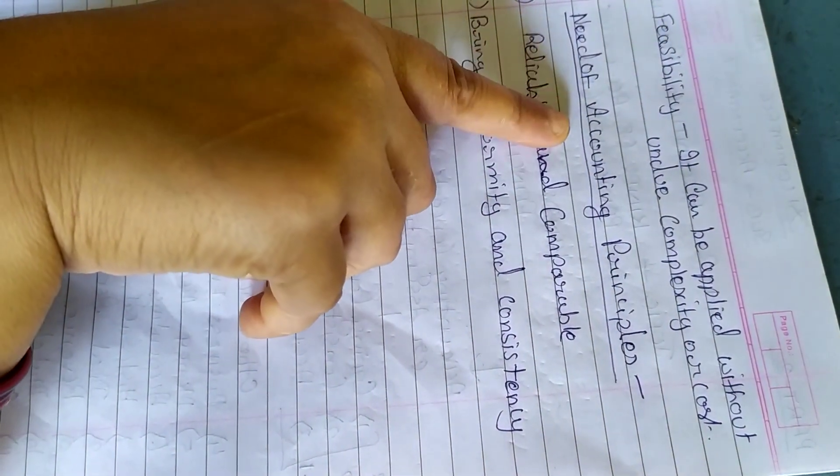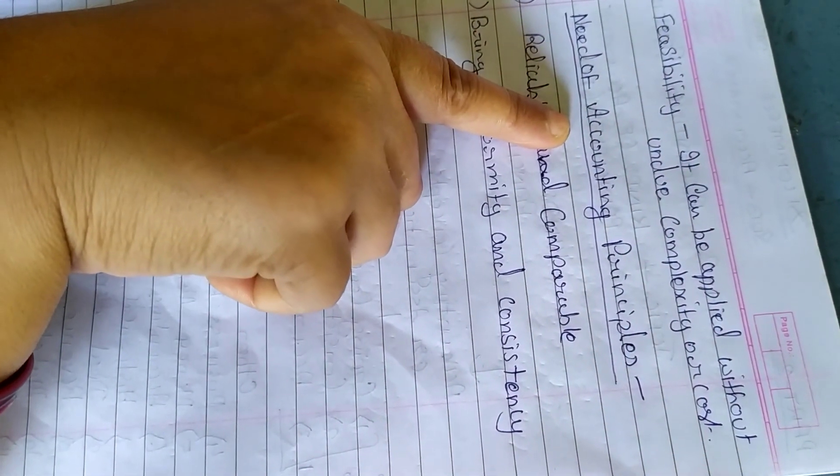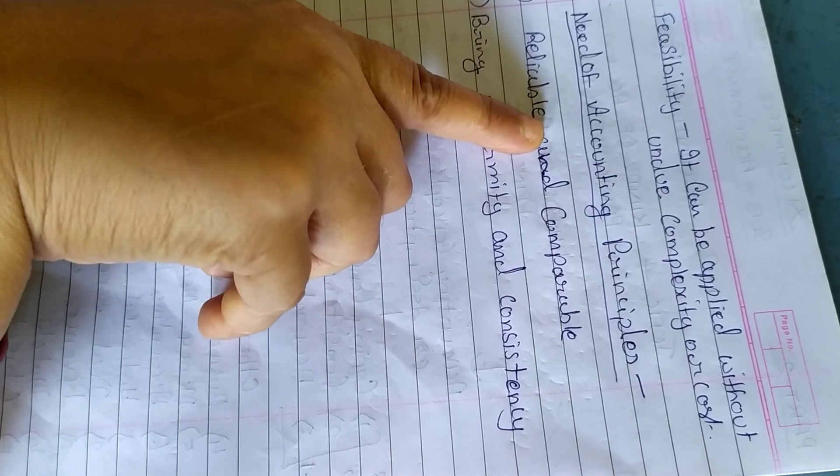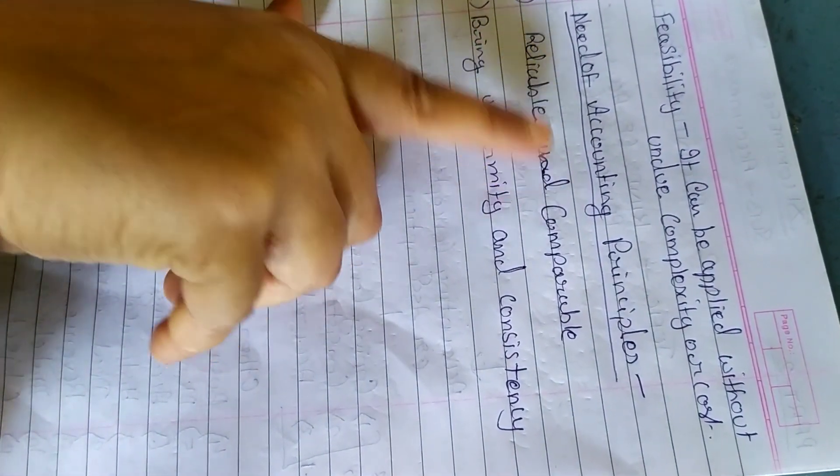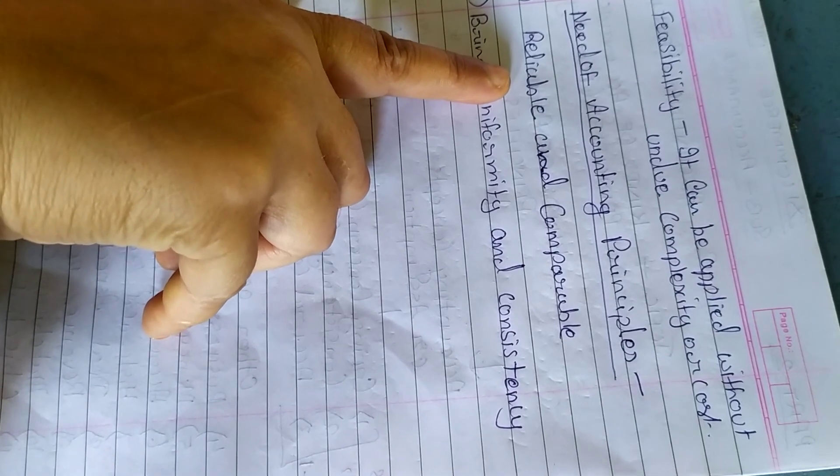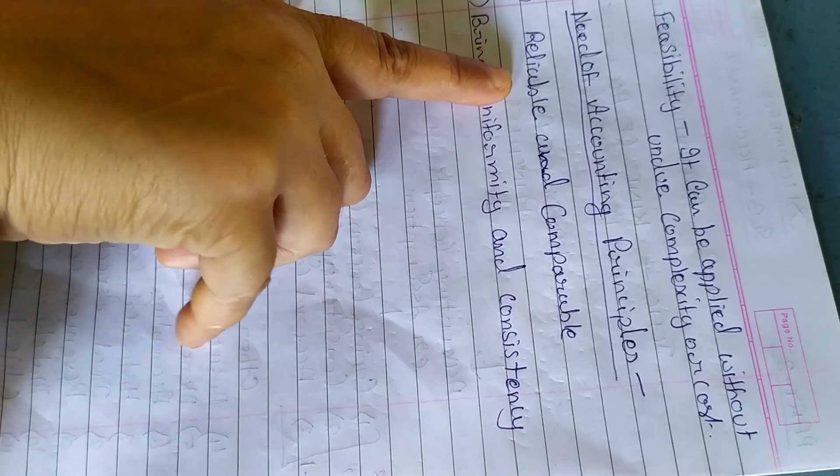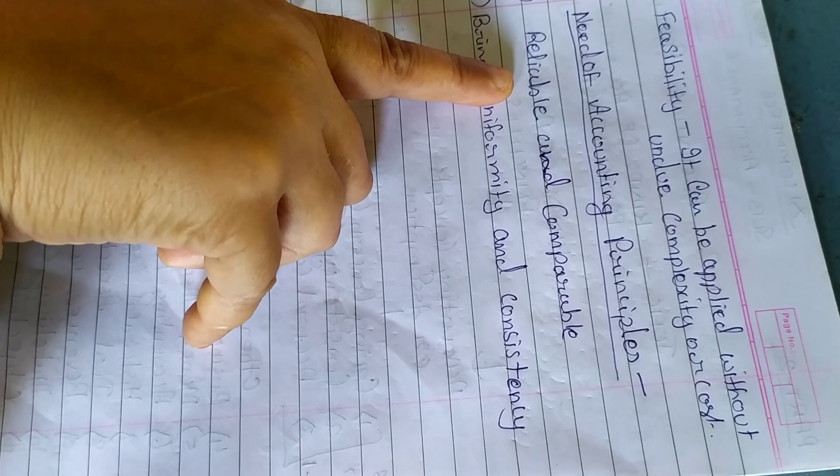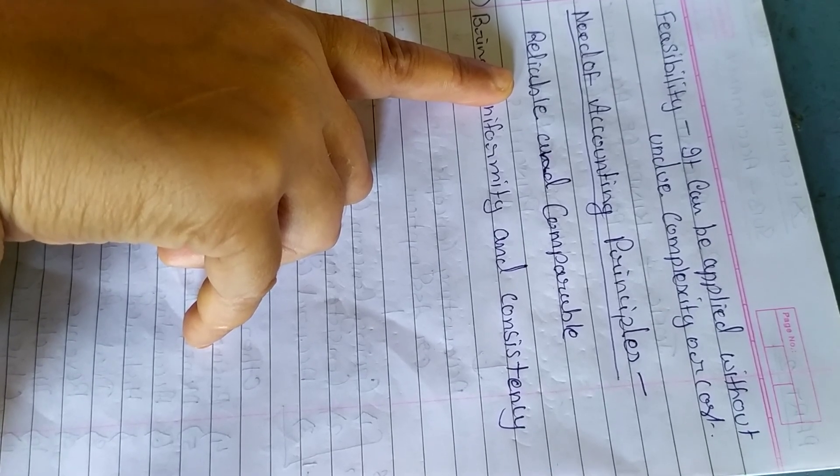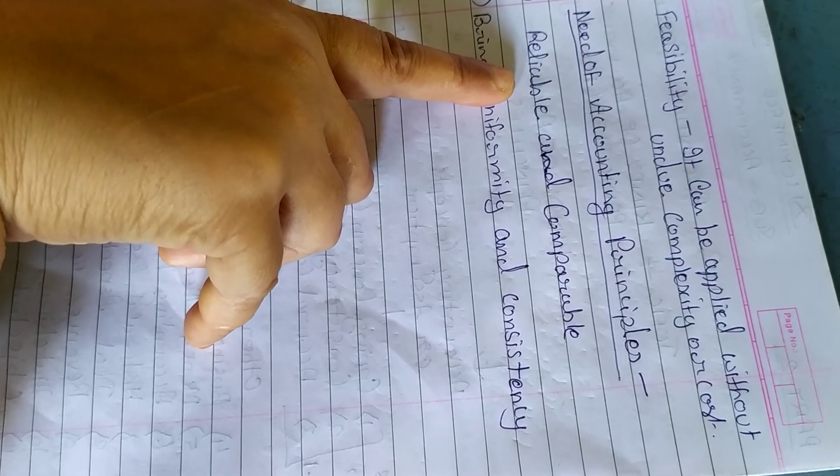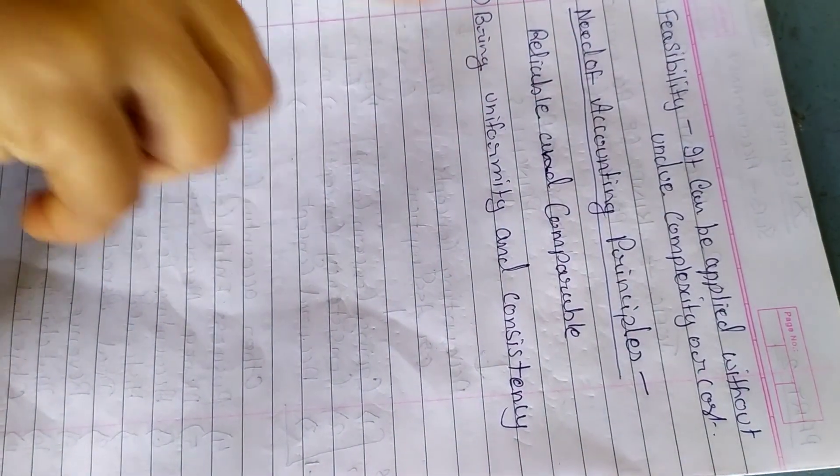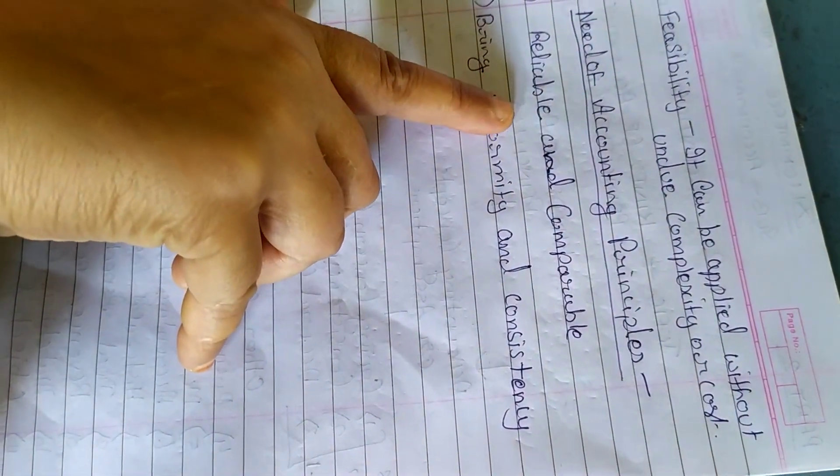The next heading is the need of accounting principle. The first requirement of accounting principle is reliability. In order to make our financial statement more reliable or make it more useful for the user, accounting principles are required.